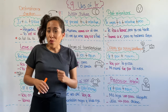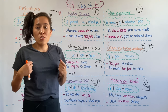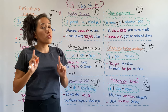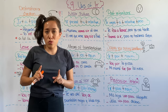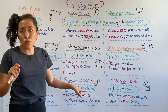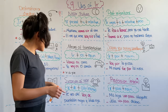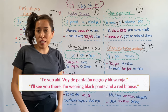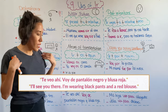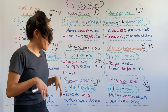Another use of ir is to use it as a synonym of usar, or to wear, and you're only going to use this meaning when talking about clothes or colors. For example: I'll see you there — I'm wearing black jeans and a red t-shirt.